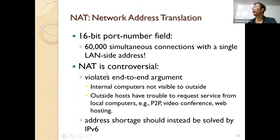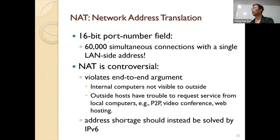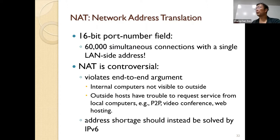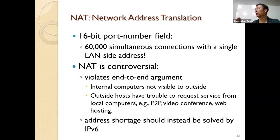NAT is actually a very successful design. When it was designed in the 1980s, people tried to solve IP address resource issues, and it turned out to be very successful. But it's also controversial because it violates the end-to-end argument. Originally, IP address was the unique identifier for every computing device on the internet. But after NAT, IP address does not correspond to each individual device anymore — for home WiFi, an IP address only corresponds to your home WiFi as a whole entity.